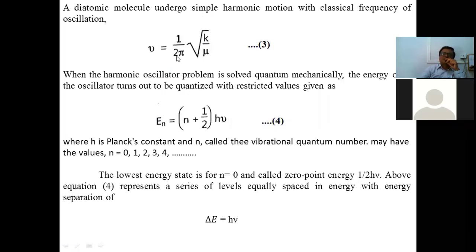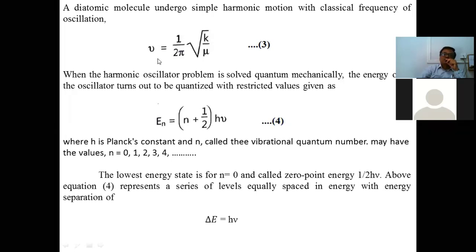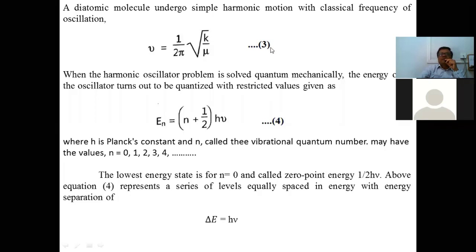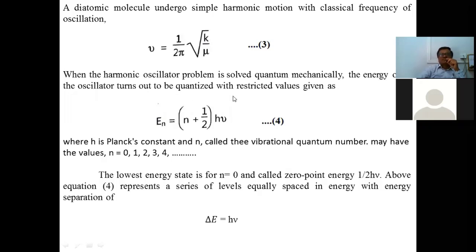This harmonic oscillator problem is solved quantum mechanically. Classically, the frequency is given by Equation 3, but when solved quantum mechanically, the energy of the oscillator turns out to be quantized with restricted values. The energy is En = (n + ½)hν, where n = 0, 1, 2, 3, 4, 5, 6 and so on.